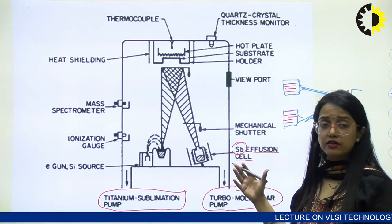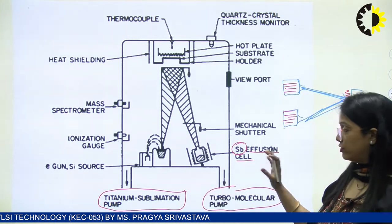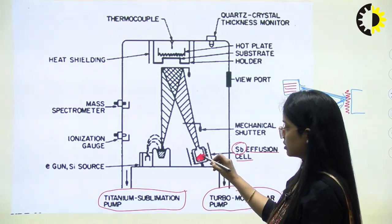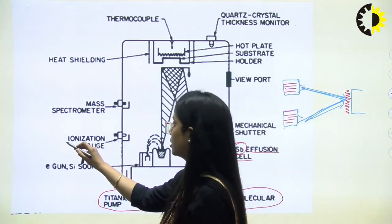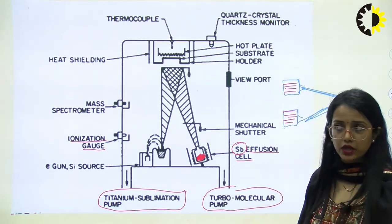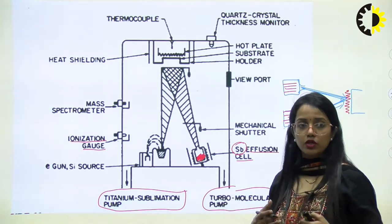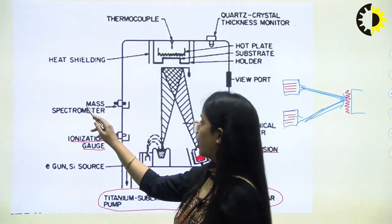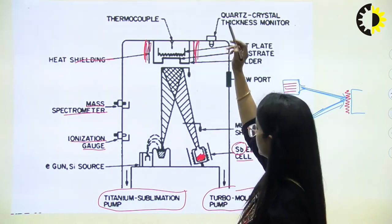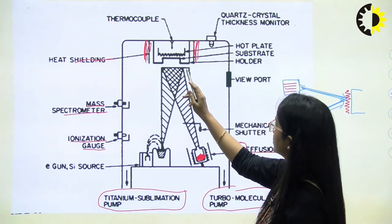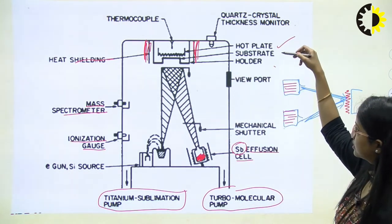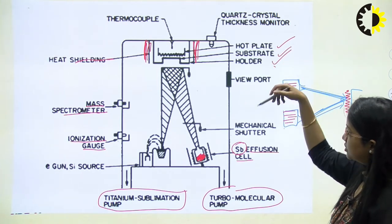For example, if we are settling antimony or bismuth, we fill up the effusion cells with this material. Here we have an ionization gauge which is used to calibrate or tune up the process, and a mass spectrometer heat shield. The heat shield is the isolation process. We also have a thermocouple, a hot plate, the substrate and holder, and a mechanical shutter.